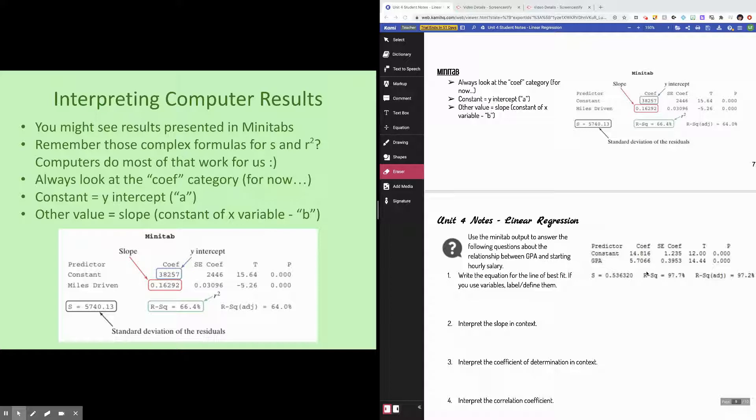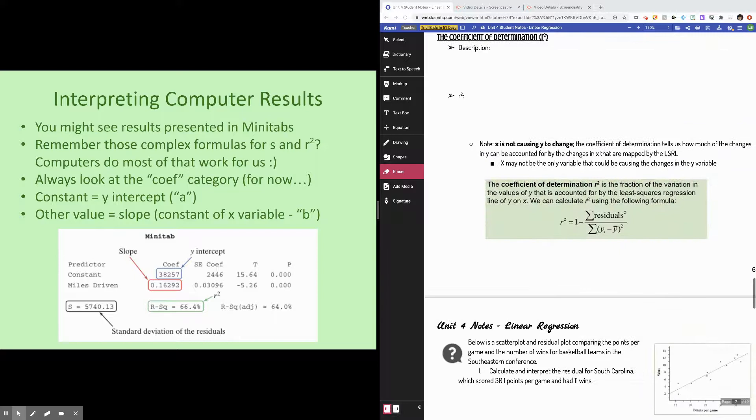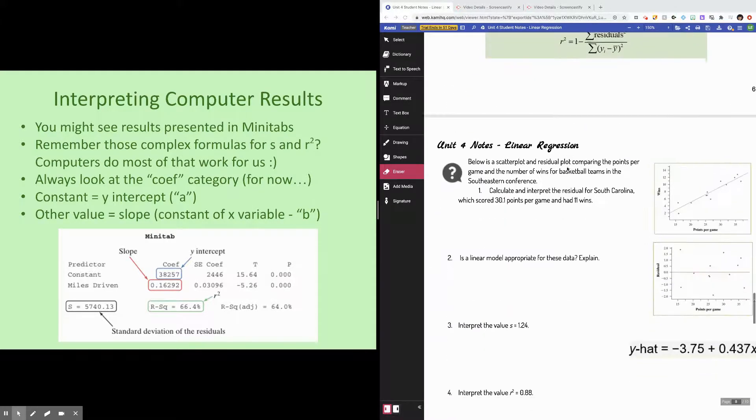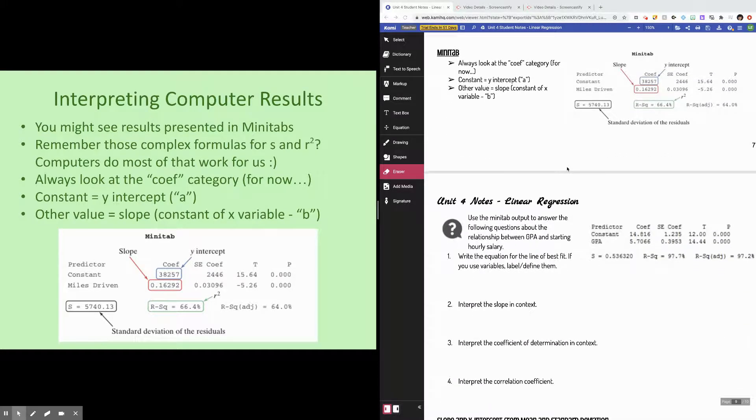In lots of linear regression problems you will not be asked to calculate slope, y-intercept, r, r-squared, standard deviation of the residuals. Most of the time they'll be given to you in a computer output called a mini-tab output, which is what you see on the left side of your screen here and also duplicated on the right side of your screen here. If you think back to the last video you saw all of these complex formulas for r-squared, for s, and for lots of other things. The lovely thing about having computers and calculators is that the computers and calculators will do most of that work for us, so we don't have to do it ourselves.